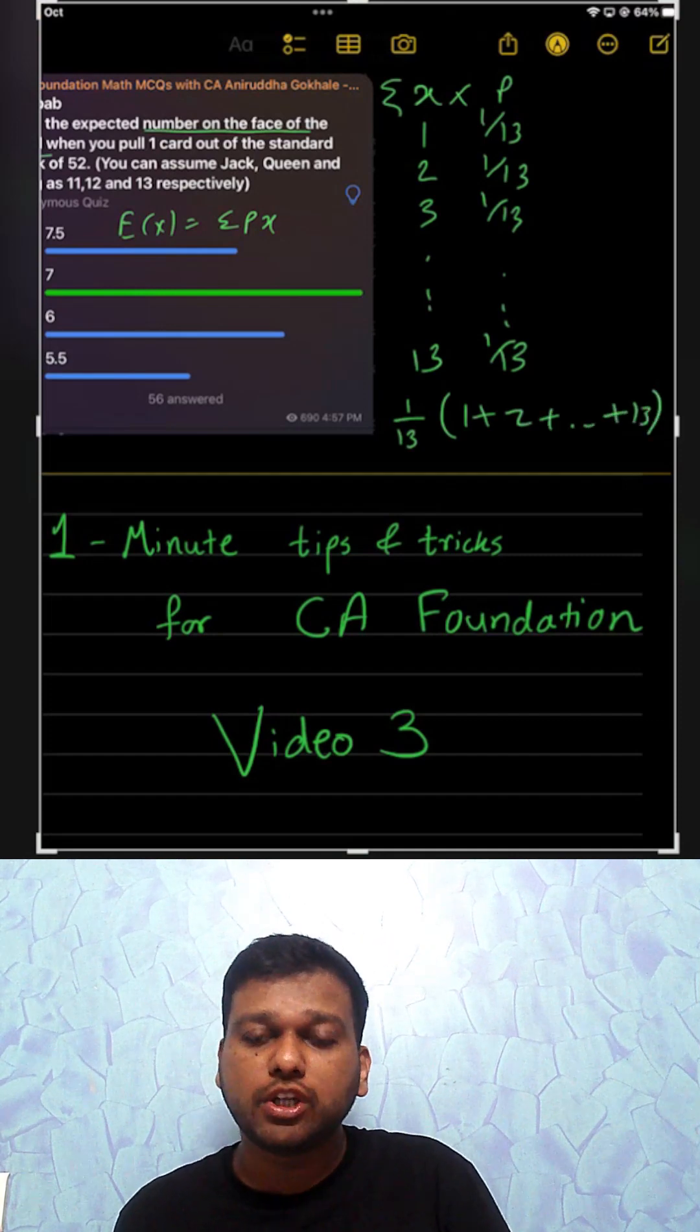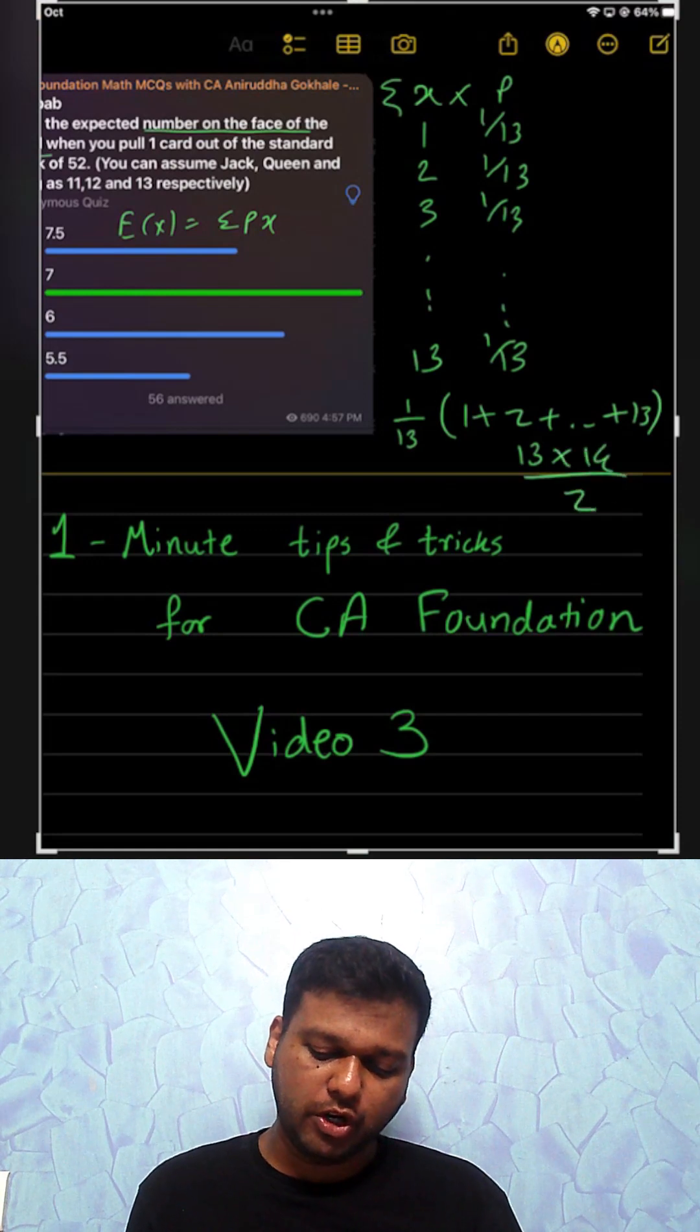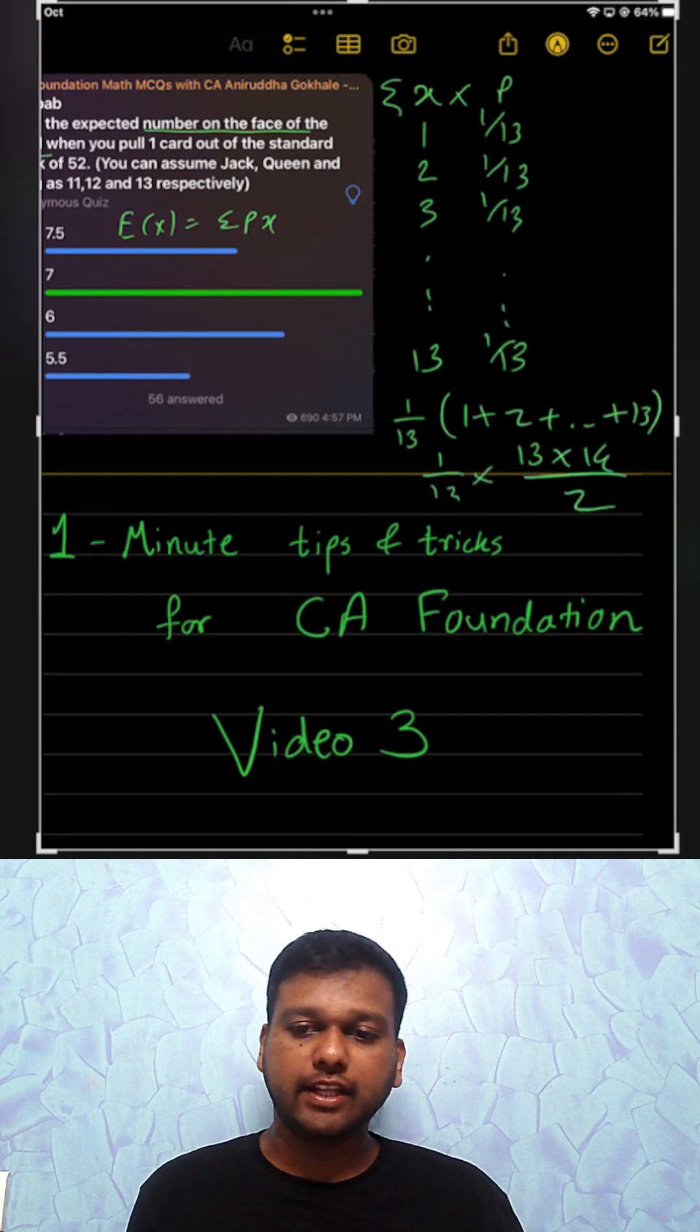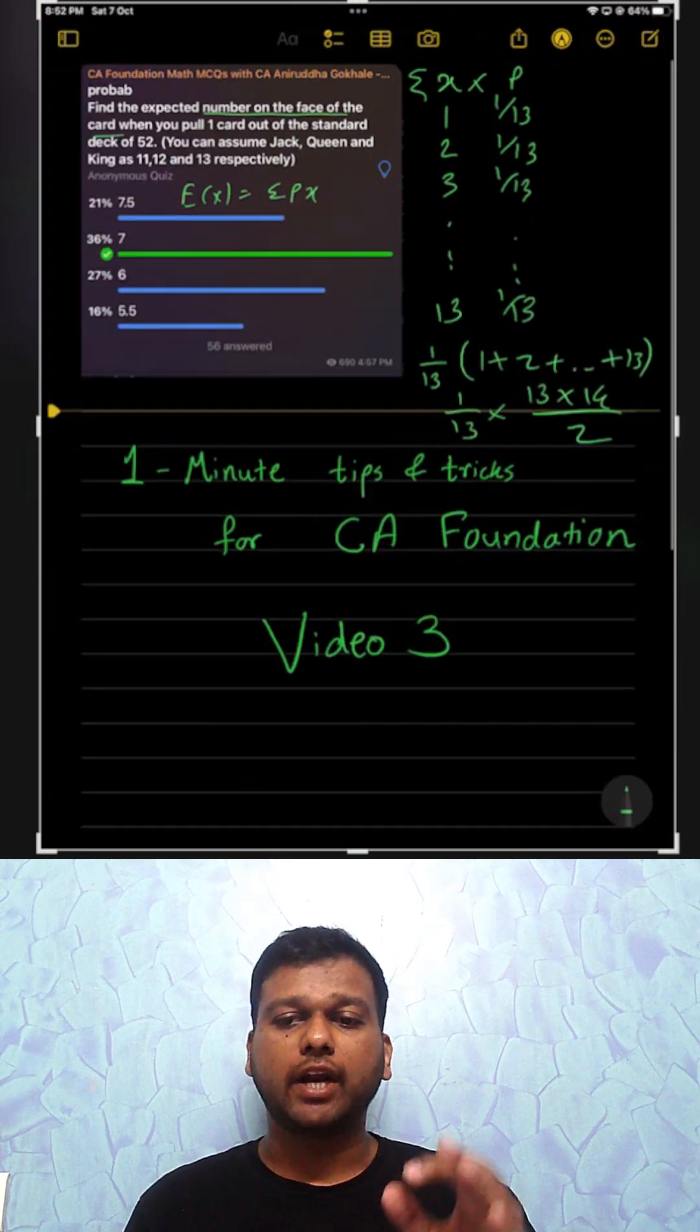What is sum of first n natural numbers? n into n plus 1 upon 2 into this 1 by 13 outside the bracket which comes to 91 by 13.